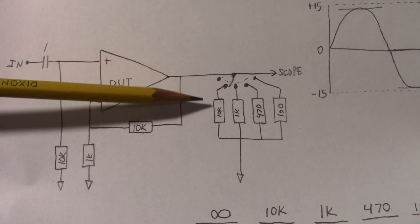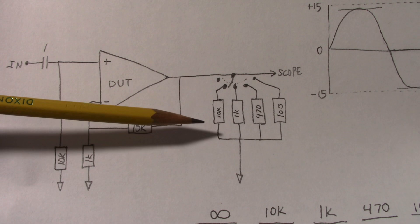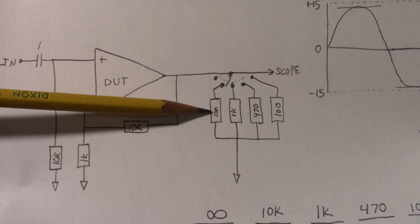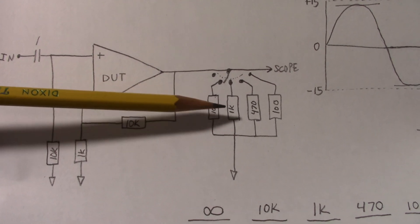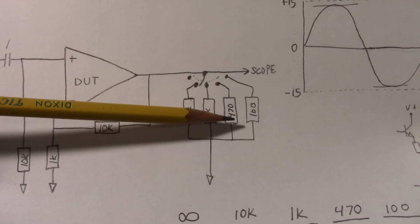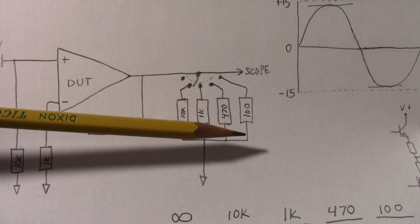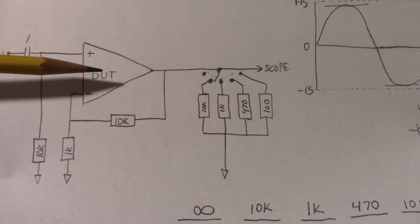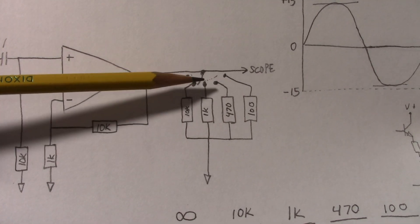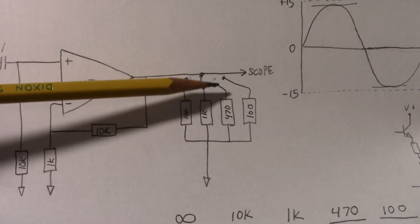So the first selection here is open, so there's no load. The next selection is 10k, then 1k, 470, and 100 ohms. And since most of these amplifiers are meant for limited current, you'll see what happens as we put more and more load on the output of this amplifier.